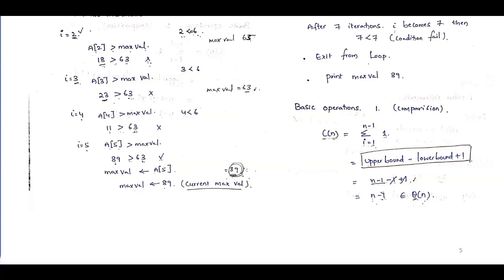After one more increment, i becomes 7, which is the input size and exceeds the for loop's upper limit, so the loop exits. The max value variable now holds 89, and the algorithm returns 89.